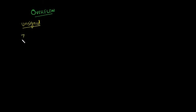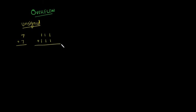Let us consider two numbers: 7 plus 7. How do we represent 7 in a 3-bit binary number? In a 3-bit binary number, we can represent 7 as 1, 1, 1. So we have 1,1,1 plus 1,1,1. Now let us perform an addition.